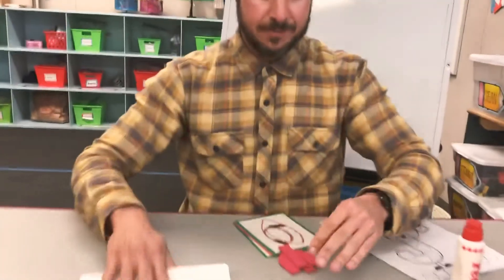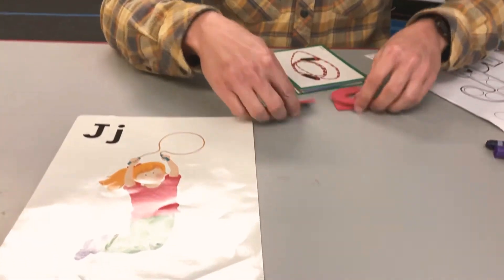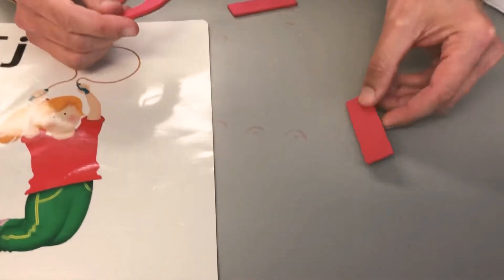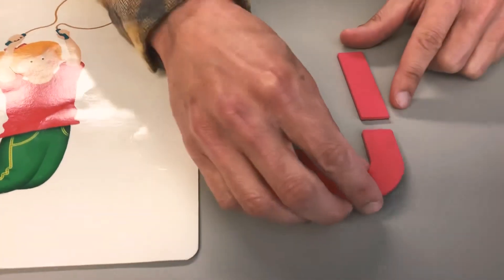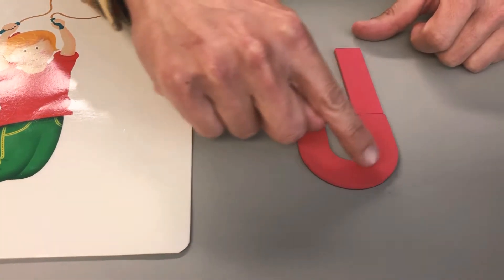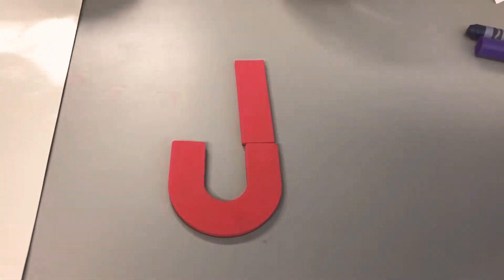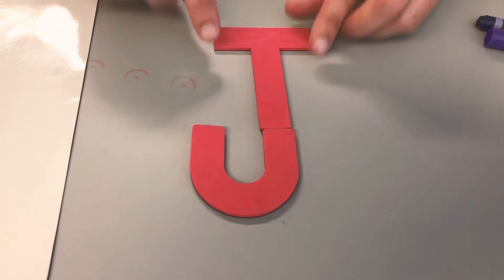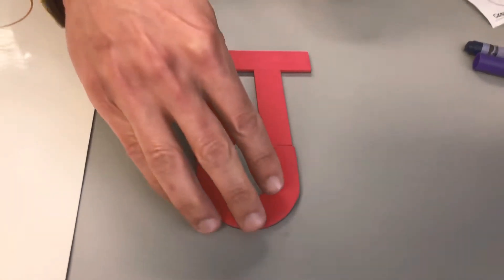Alright, so today we talked about how to make the letter J. So I'll show you really quick. Line down and then turn up and then the last step would be jumping to the top and then having a little line go across. There's the letter J.